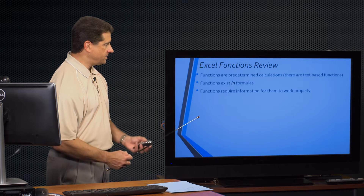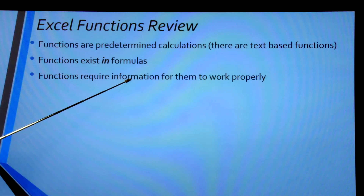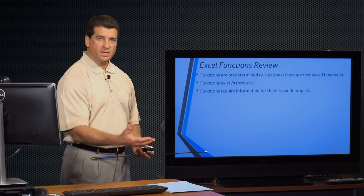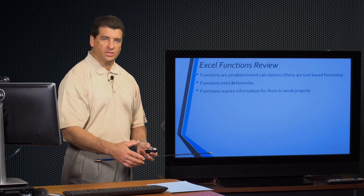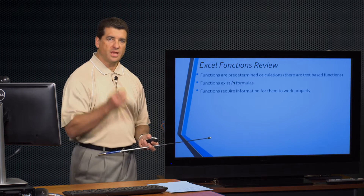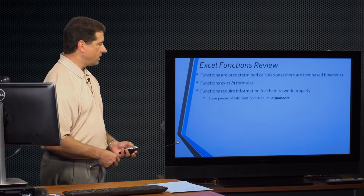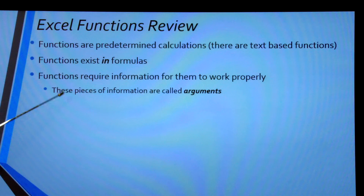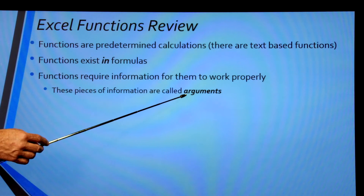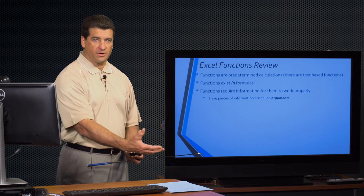This is the big key — this next piece of information. All functions require information for them to work properly. So depending on what the function does, it requires information to do the calculations. Not all functions are mathematical — there are text functions and all sorts of functions. They need information from you in order to work properly. These pieces of information that are required are called arguments. Some functions have one argument, some functions have five arguments — they're all different.